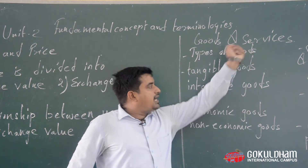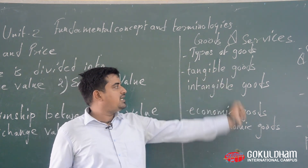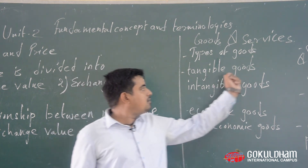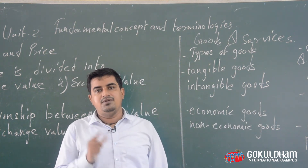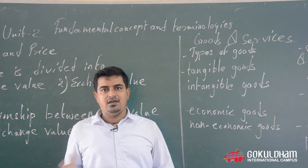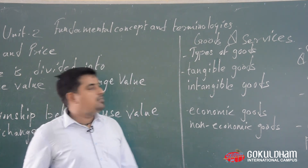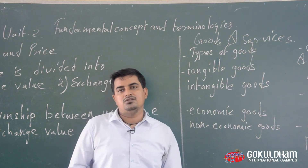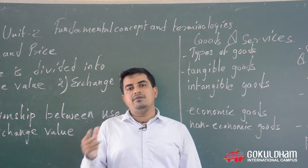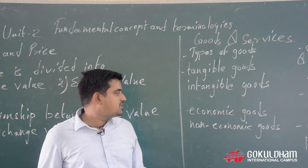Next is types of goods. Goods mein tangible goods aur intangible goods aate hain. Goods which have physical existence and which can be touched are termed as tangible goods, like ball, bed, table, chair, etc. While goods which cannot be touched and don't have any physical existence are termed as services, and in this category banking, insurance, education ke examples diye ja sakte hain.